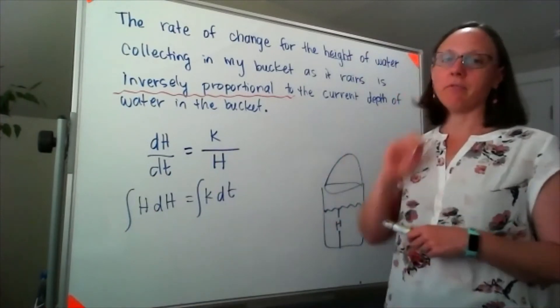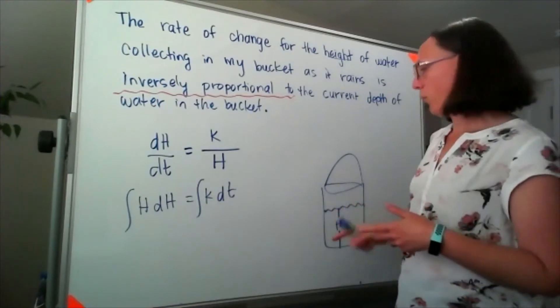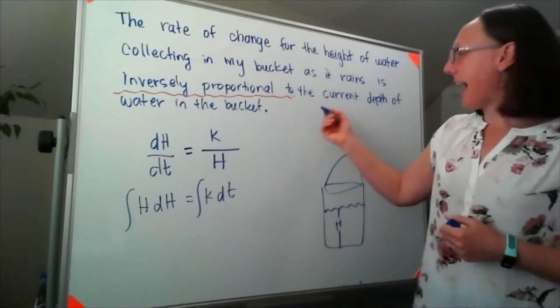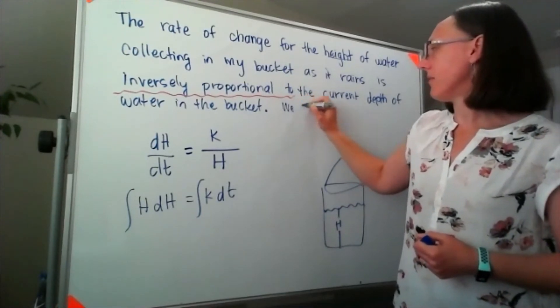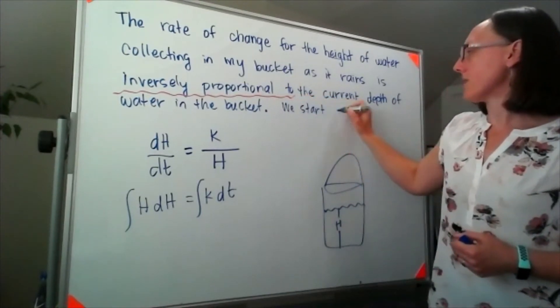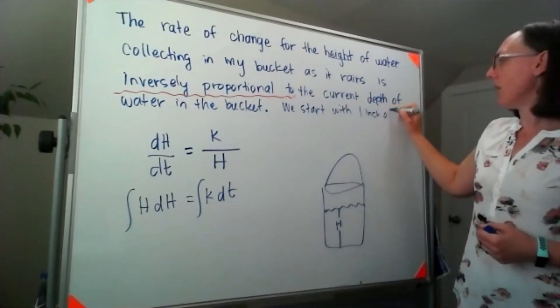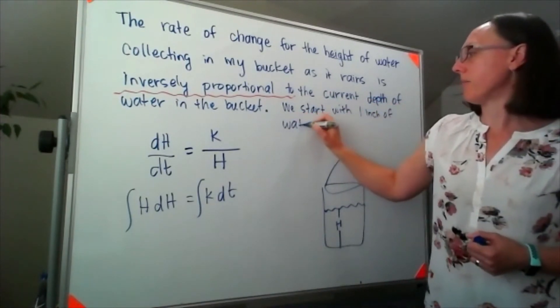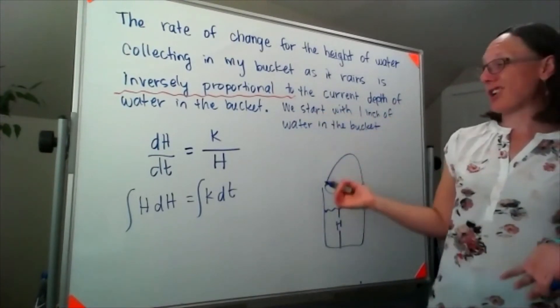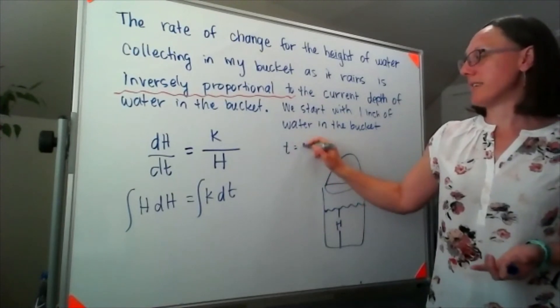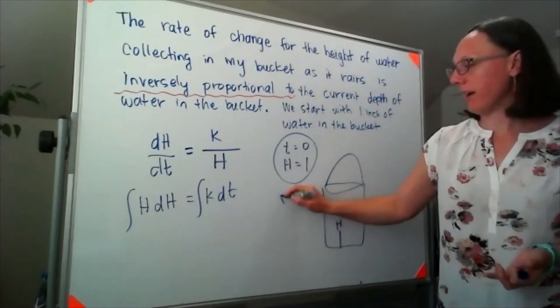Now it didn't give us an initial condition here, but I could have said that we start with one inch of water in the bucket. If I added that piece, then that means our initial condition would be that when t equals zero, h equals one. That would be our initial condition.